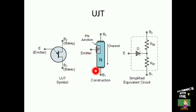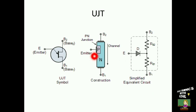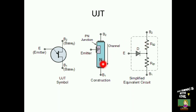This is the structure of UJT. In the lightly doped N-type bar, a heavily doped P-type material is diffused to form the P-N junction. This is the equivalent circuit of the UJT. Here the P-N junction is represented by a P-N junction diode. The internal resistance of base 2 is represented by RB2, and the internal resistance of base 1 is represented by RB1.